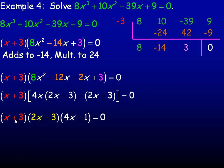Don't forget your x + 3 factor on the left here. 2x - 3 factors out, and what's left after you factor the 2x - 3 out will be 4x minus 1. So we have three different factors, so there are three different roots to this cubic equation.